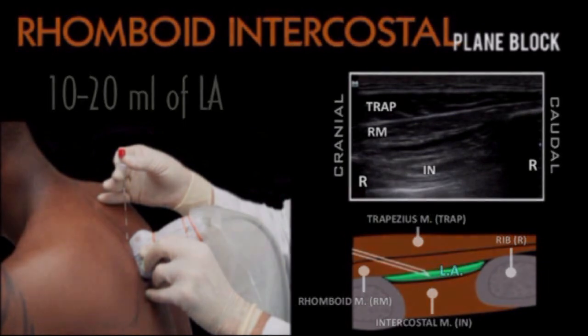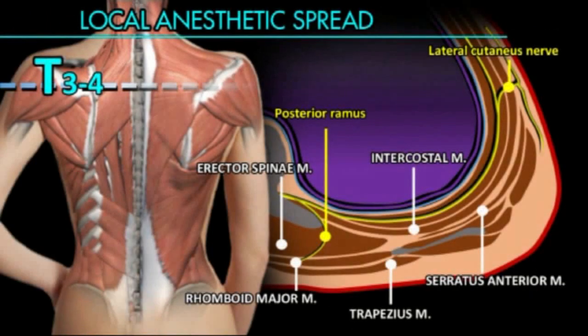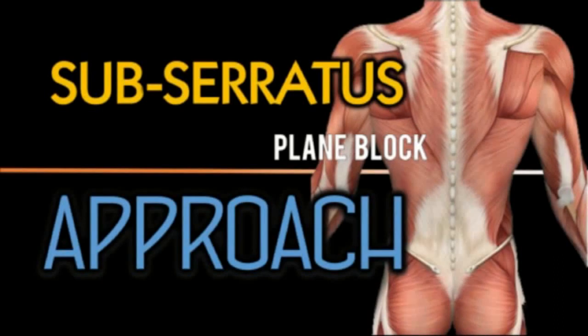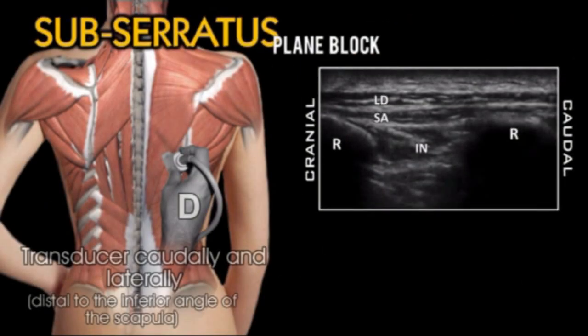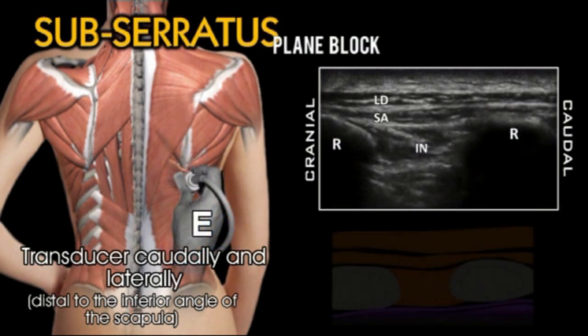The local anesthetic spreads deep to the scapula and serratus anterior muscle, targeting the lateral cutaneous branches, and spreads medially deep to the erector spinae. To identify the sub-serratus plane, move the transducer caudally and laterally, distal to the inferior angle of the scapula.